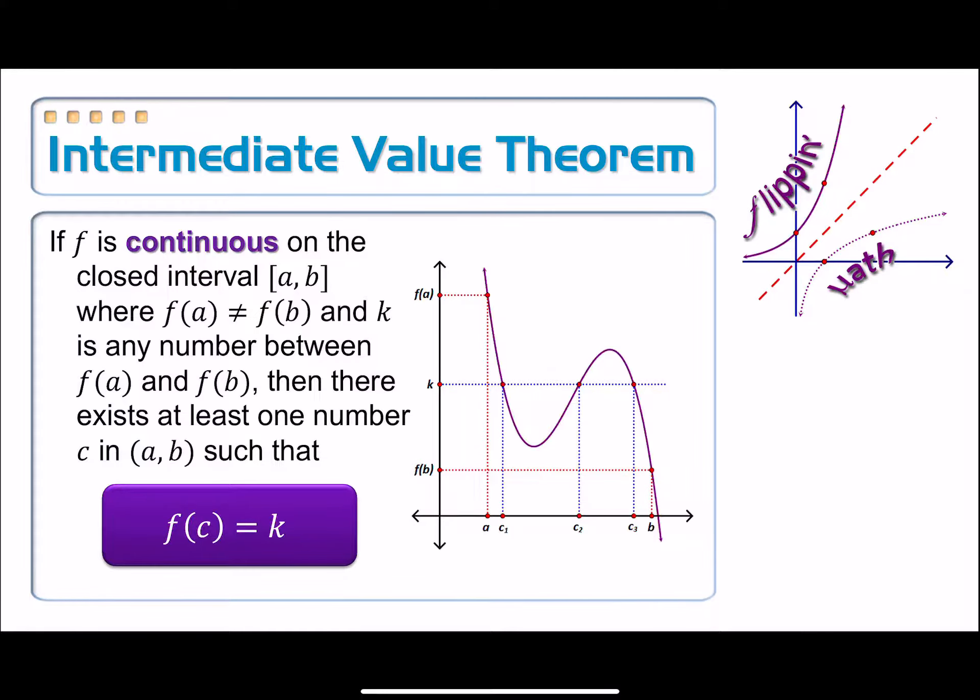So if I go back to its being continuous, no matter where you choose in between f of a and f of b, this k value, you always get a corresponding x value. So it basically means that on a continuous function, f of x is going to take on every single y value in between those two. And that's how we were able to use it to predict the location of one particular zero.